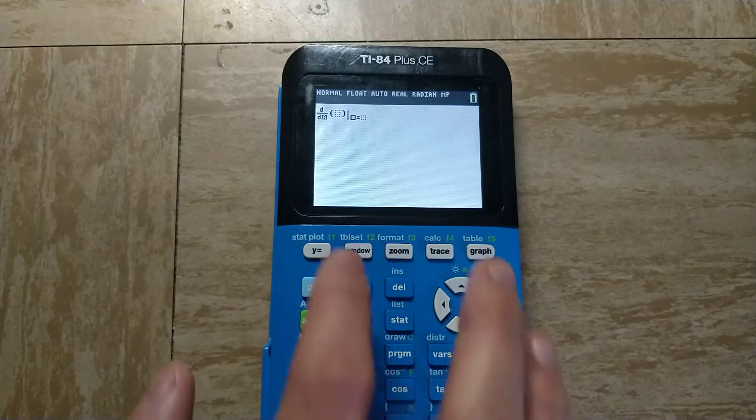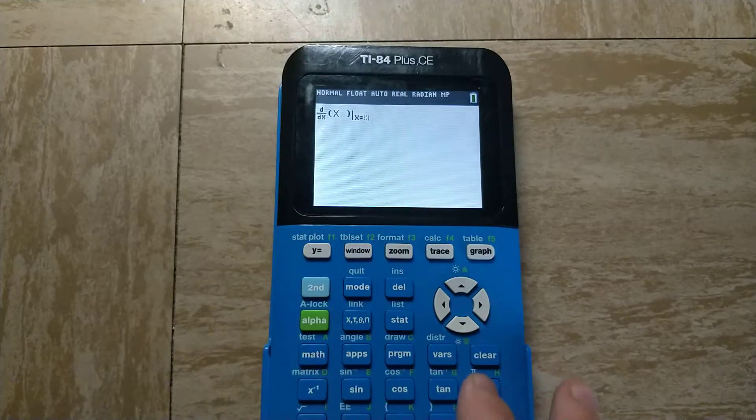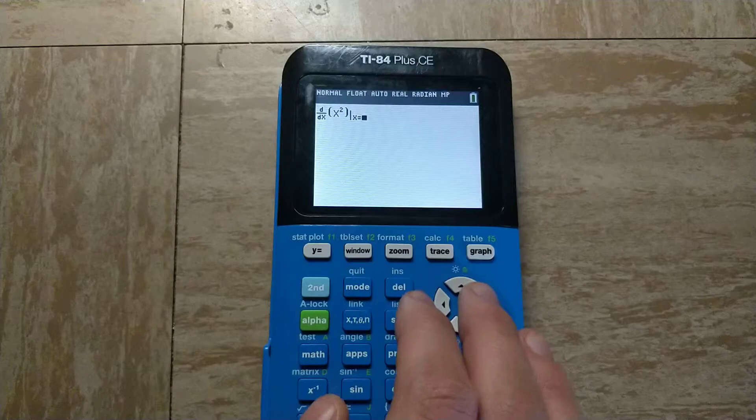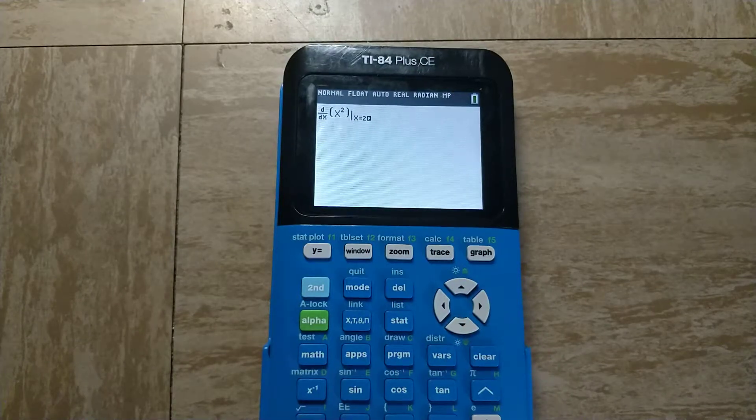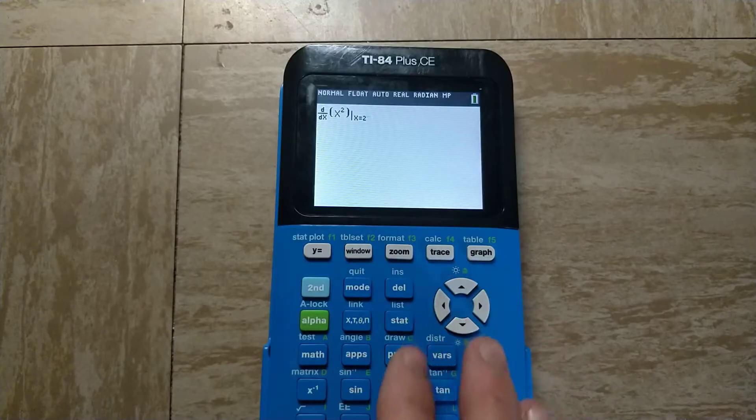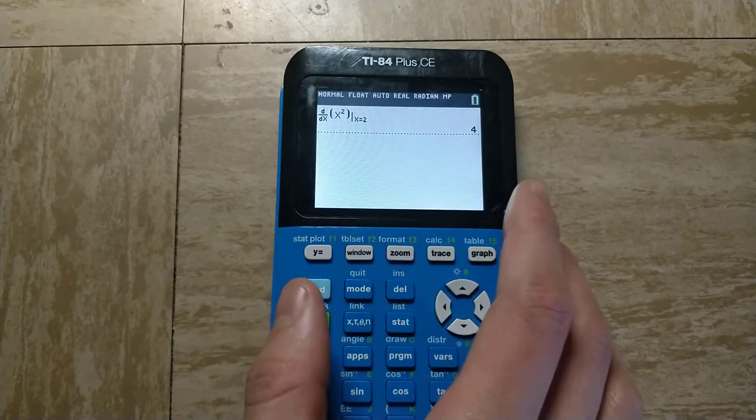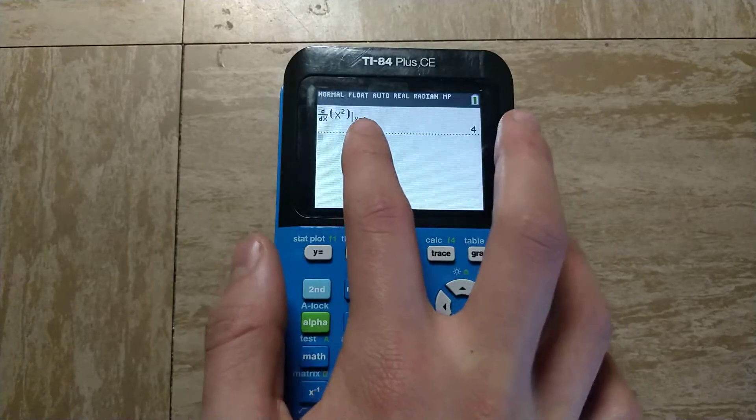In this case, I want to find the derivative with respect to x of x squared at x equals 2, and I'm just using the arrow keys here to navigate between the options. Then I would just press enter, and you would see that the derivative of x squared at x equals 2 is 4.